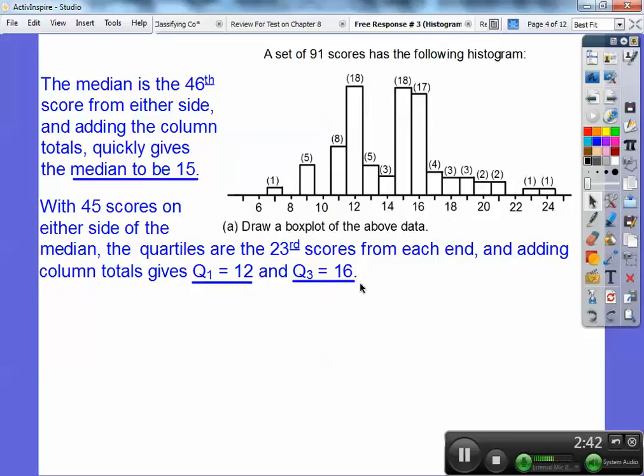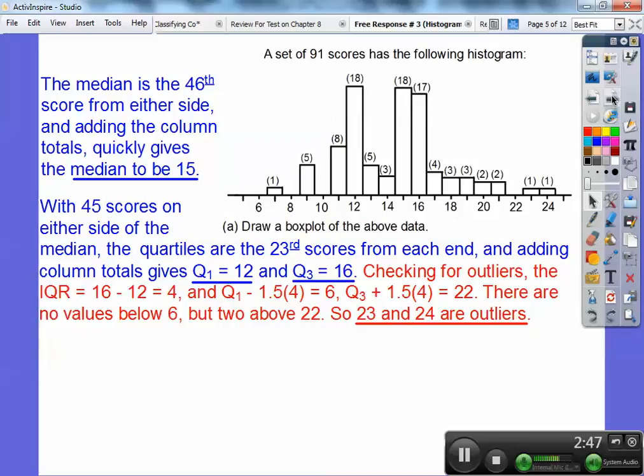And then we do 1.5 times the IQR. And as long as it doesn't go below that, so checking for outliers, the IQR is four. And so if I go quartile one minus 1.5 times the IQR, that gets me six. I don't see any numbers that are below six. And then, so then I do quartile three. Quartile three is this 16. So 16 plus 1.5 times the IQR. That gets me 22. So there's the upper limit right there. So I see two outliers right here. There are two outliers above the upper limit of 22. So I'm going to have little dots at 23 and 24.